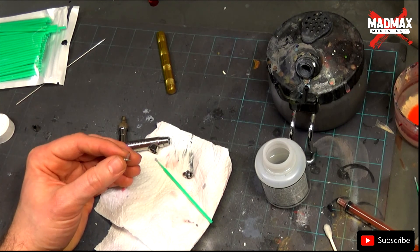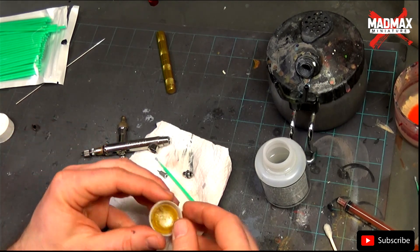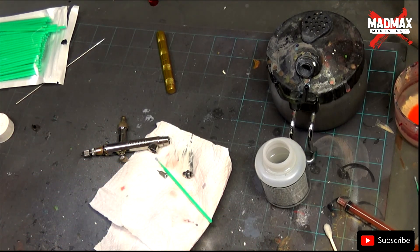To do so, you just take a small container. You add a small amount of airbrush cleaner and you let the pieces soak for a few minutes.